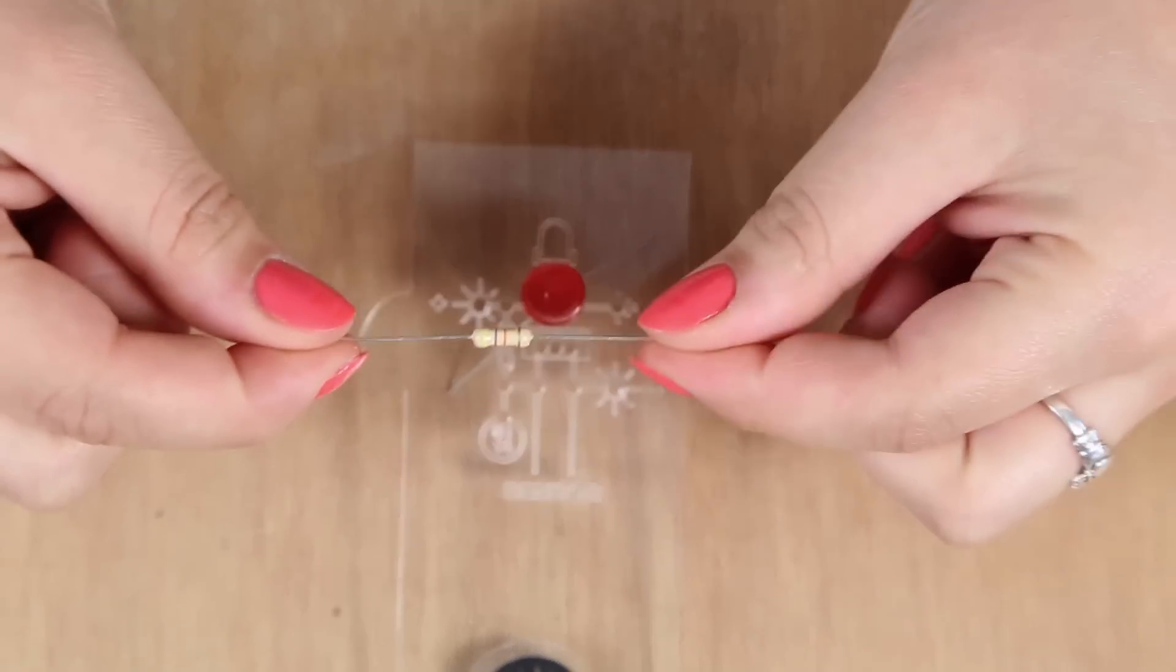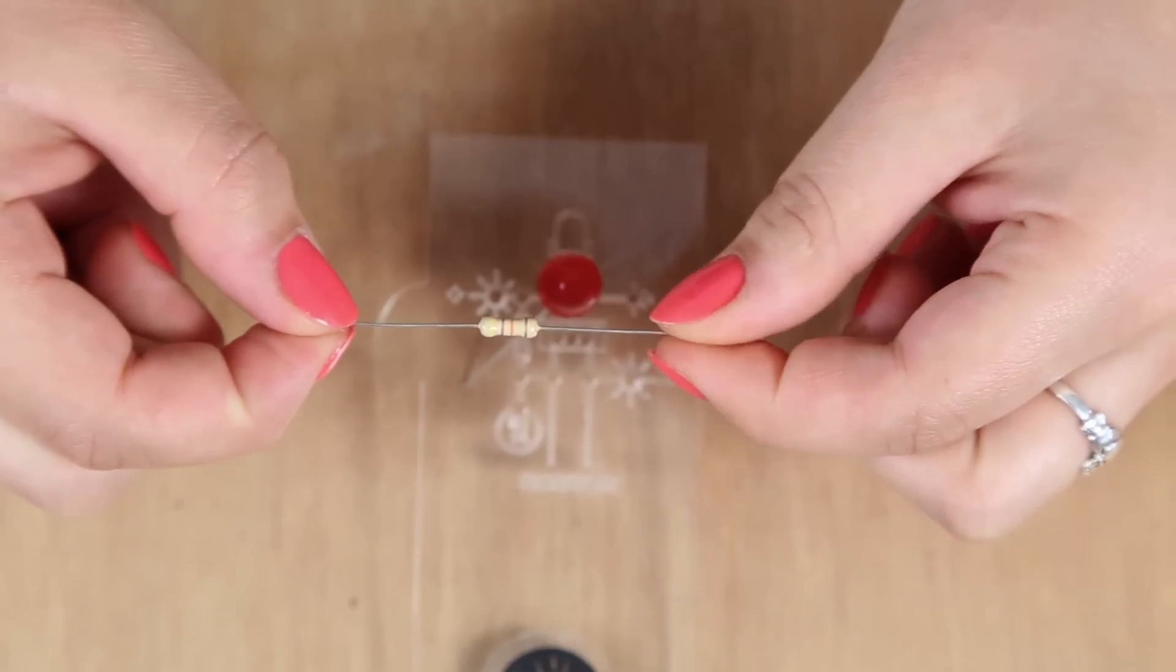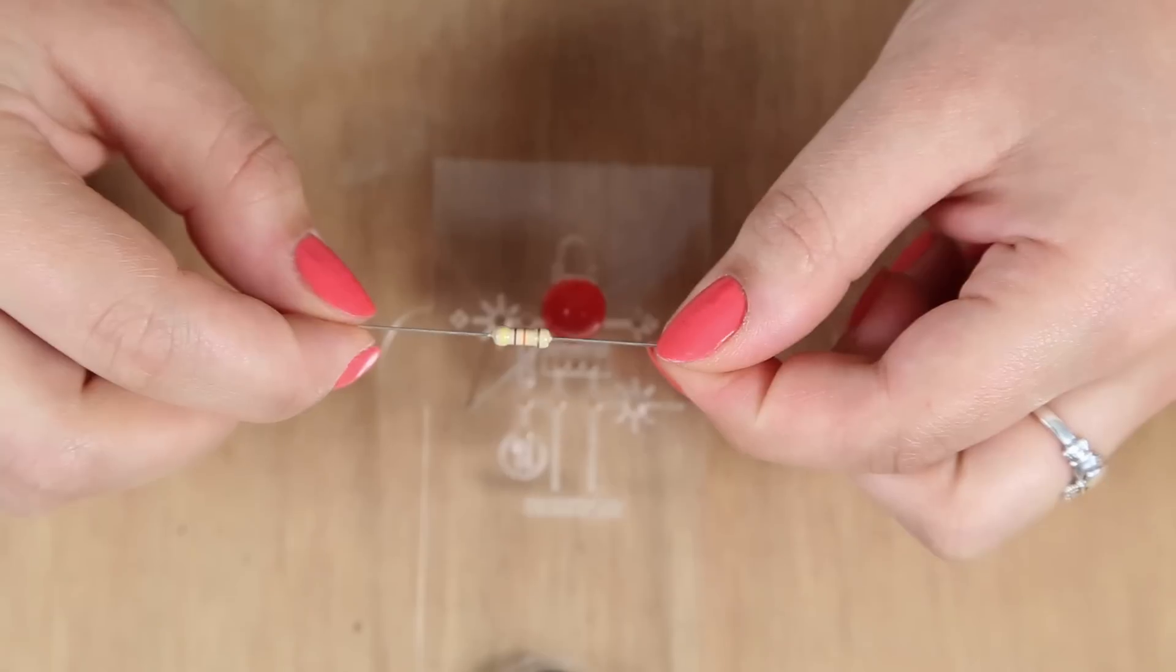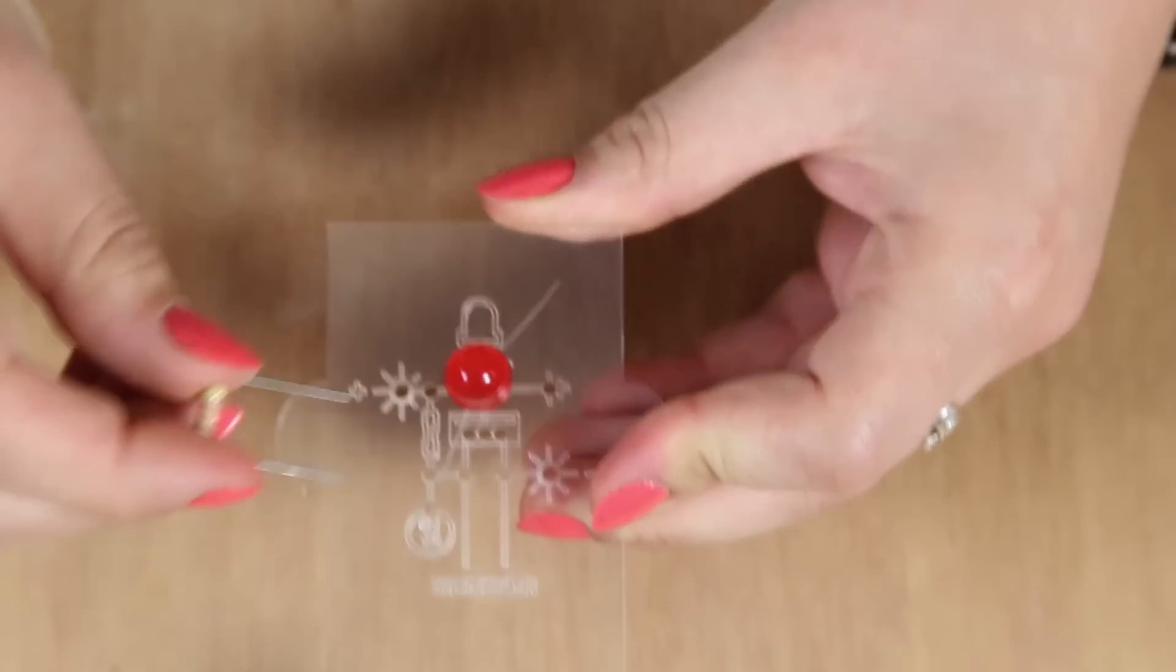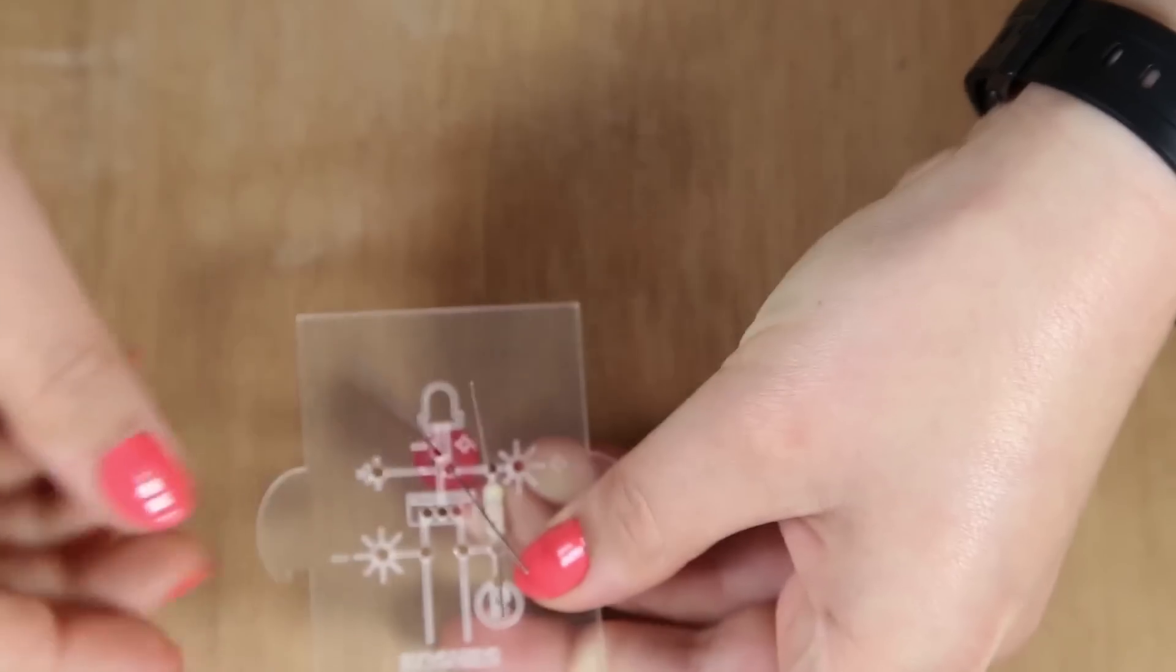So the second component we want to put in is called a resistor. We can tell the value of the resistor from the stripes of color which are on it. So this one has yellow, violet, orange, and gold, so that means 47 kilo ohms. So we want to put it in the front like this and then bend the legs to keep the component in place.